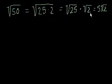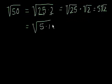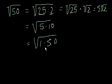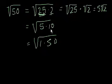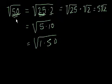You might be saying, how did I know to split 50 into 25 and 2? Why didn't I say 50 is equal to 5 and 10, or 1 and 50? Well, the reason I picked 25 and 2 is because I wanted the largest factor of 50 that is a perfect square, and that's 25. If I had done 5 and 10, there's nothing I could have done, because neither 5 nor 10 are perfect squares. So think about the factors of the original number and figure out if any of those factors are perfect squares. You really just have to learn to recognize perfect squares and you'll get familiar with them.